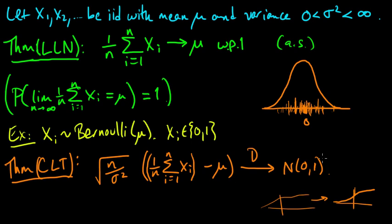The normal distribution has a very large number of very special properties and occupies a very unique place in probability theory. These are the two most important theorems — the LLN and the CLT — the most important theorems in all of probability theory.